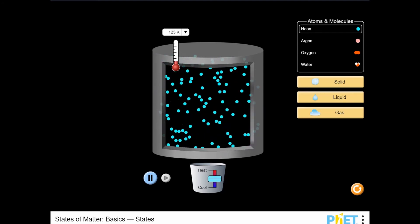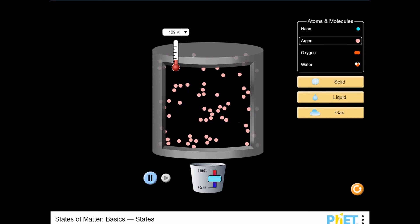If you apply more or less temperature by clicking and dragging with your mouse on the lever icon, you can observe what happens to the substances.